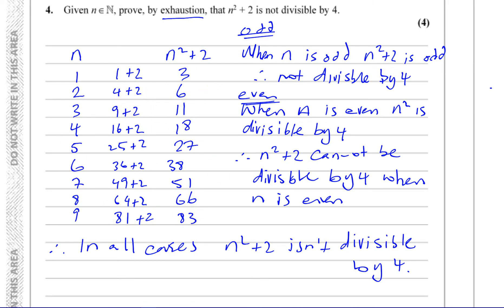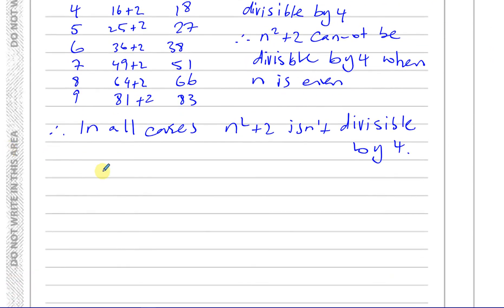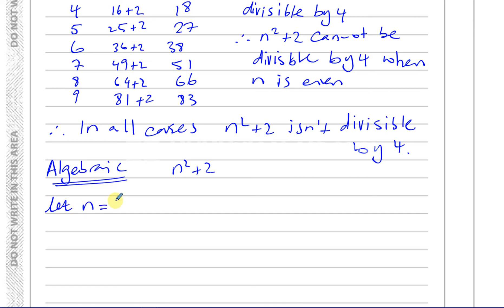You could also show this algebraically. For the algebraic proof: let n equal 2k, where k is an element of the natural numbers — therefore n is even. Whatever value k is, you multiply it by 2, so if k is 1 you get 2, k is 2 you get 4, k is 3 you get 6. For every value of k, n will be even.